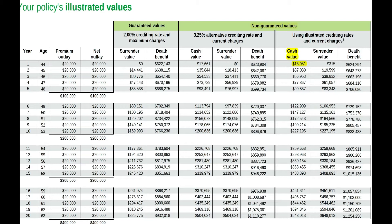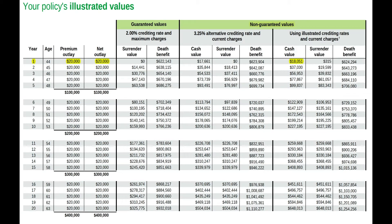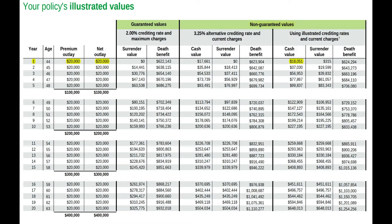Cash value is the amount of cash available in your policy that you can access in the form of loans or withdrawals. You can see in year one, the annual premium is $20,000, but the cash value is $18,051, and that is because the cash value is reduced by the surrender penalties. The surrender value is the amount you would receive if you were to terminate the policy after the free look period, which ranges between 7 to 30 days depending on what state you're in.